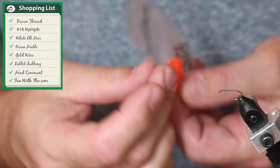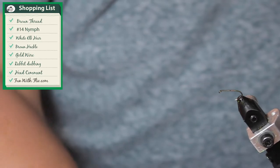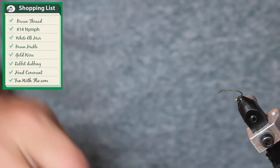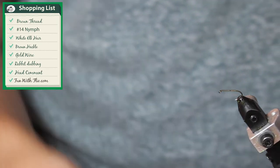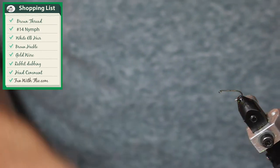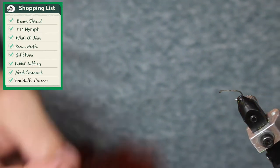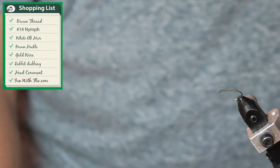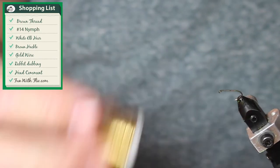What I'm using is some nymph hook, size 14. I've got some dubbing, some elk hair, some white elk hair, some brown hackle, and I've got some gold wire.